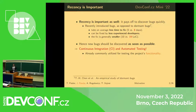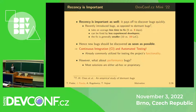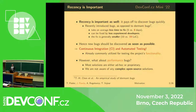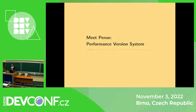But what about performance bugs? You might develop some tool, framework, or utility script targeting performance, but those solutions are mostly ad hoc or proprietary — not complex enough and not open source. So, meet Perun: a performance version system that tries to tackle this issue.